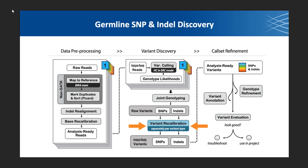Here we are in the pipeline. We have our raw variants — they're unfiltered — and now we want to filter them. It should be clear that filtering happens at the variant level, meaning every row of that VCF is either going to be filtered or not filtered. You can't have a scenario where for one sample a genotype is okay but another genotype is not okay. That's not how we operate in this scenario.